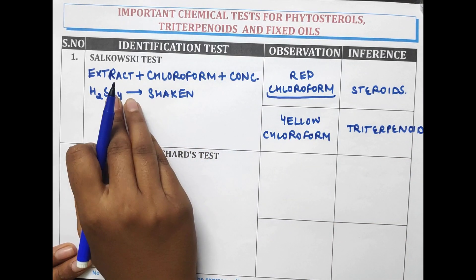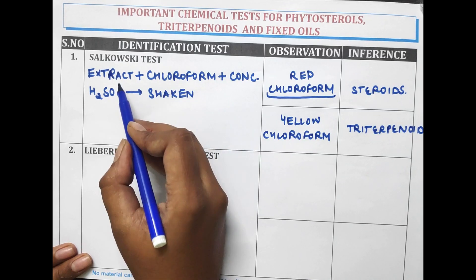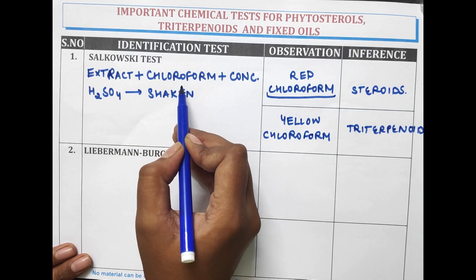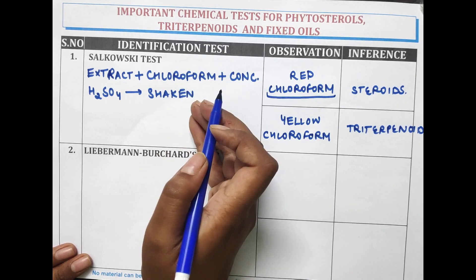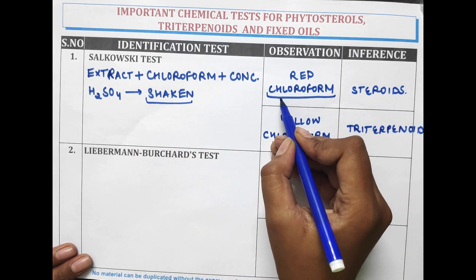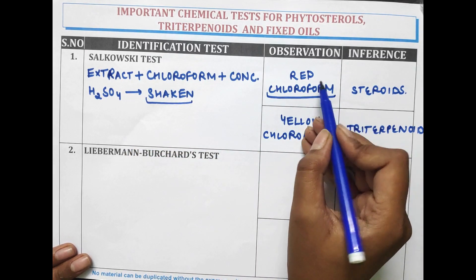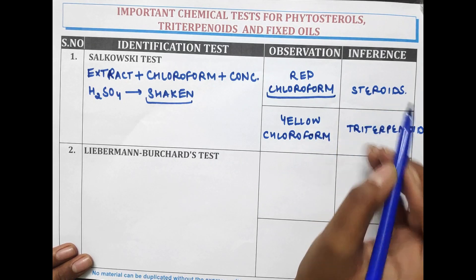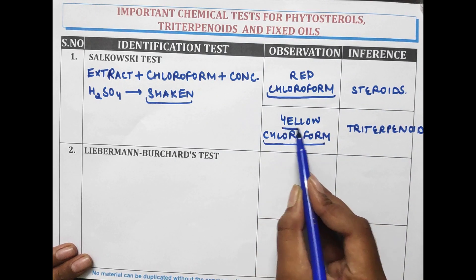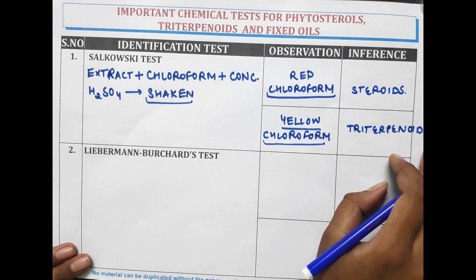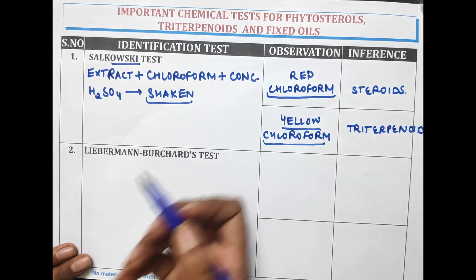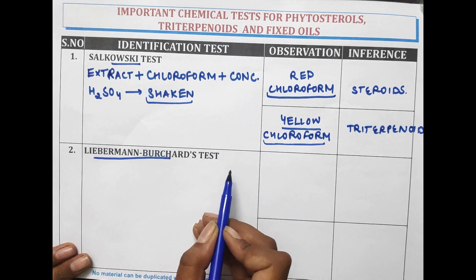In summary, in the Salkowski test, extract is used. To the extract, few drops of chloroform and concentrated sulphuric acid are added and the mixture is shaken well. A change in the chloroform layer to red colour indicates presence of steroids, whereas change of the chloroform layer to yellow colour indicates presence of triterpenoids. That concludes the Salkowski test.